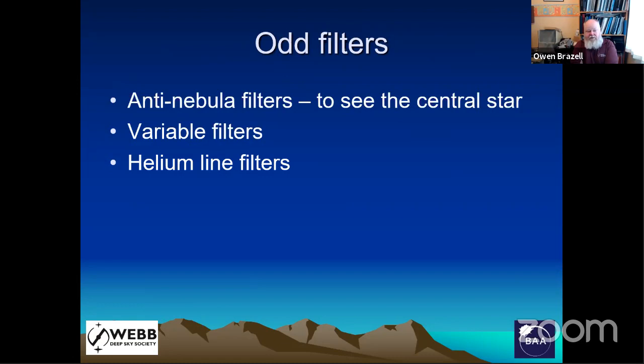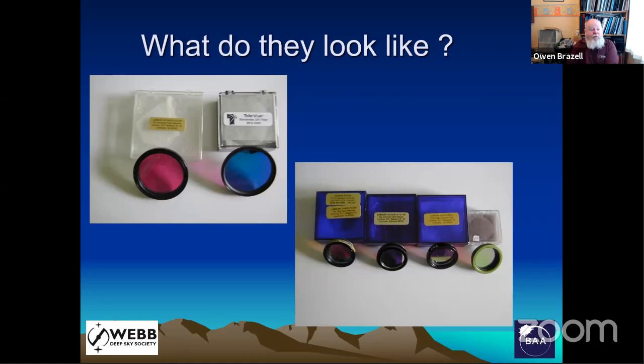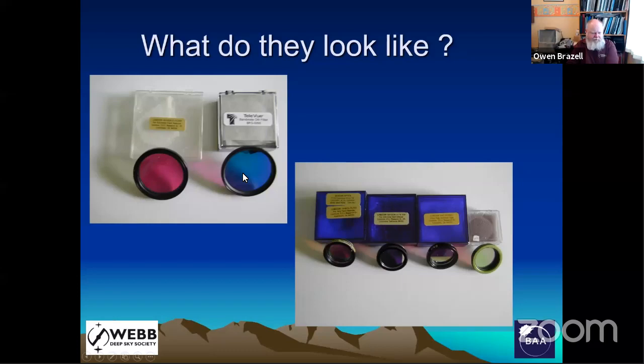You can also have unusual filters. Anti-nebula filters might sound odd, but if you want to see the central star of a planetary nebula you might want to cut out the nebula light. Variable filters came along some time ago. You can also have helium line filters which show different parts of the planetary nebula. Filters come in the classic two-inch and one-and-a-quarter inch sizes. From the different makes you can see they have different bandpasses — the Televue one had a different bandpass from a Lumicon filter, just from the colours coming through.